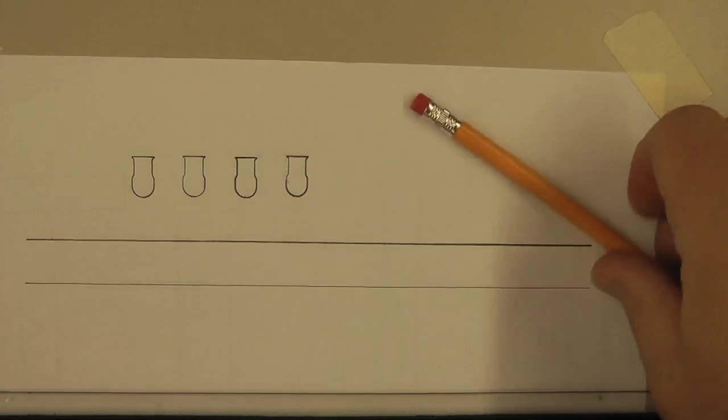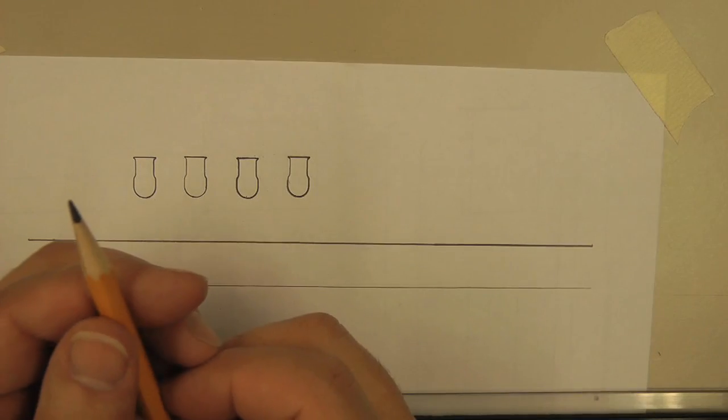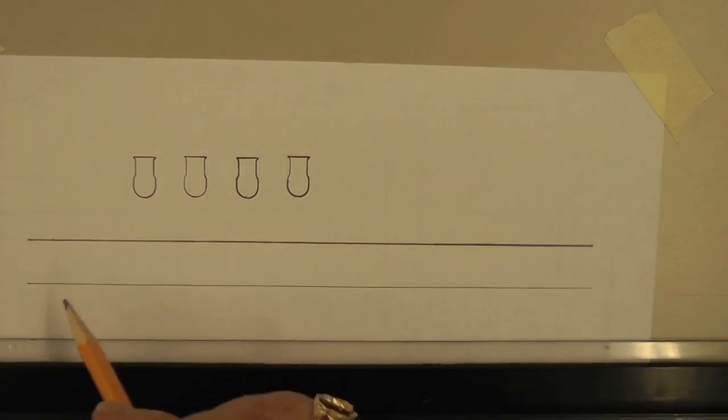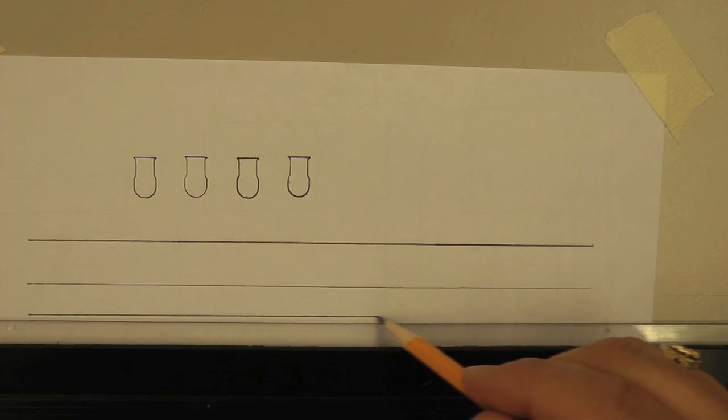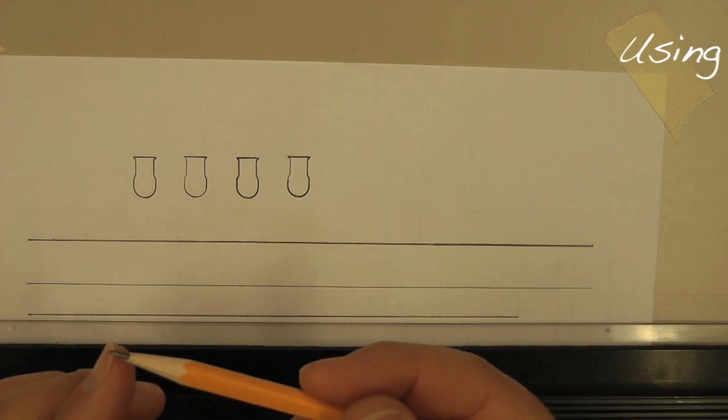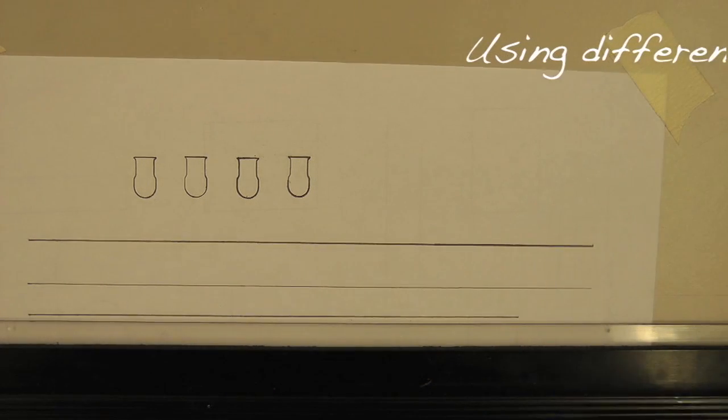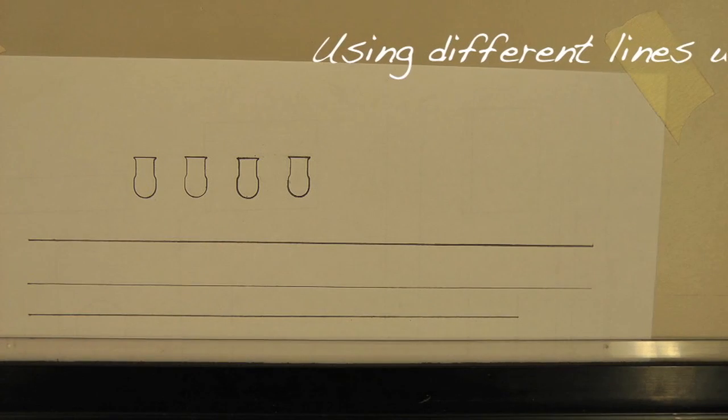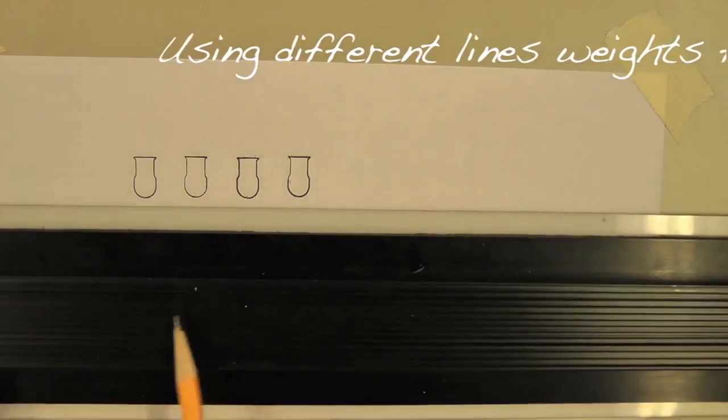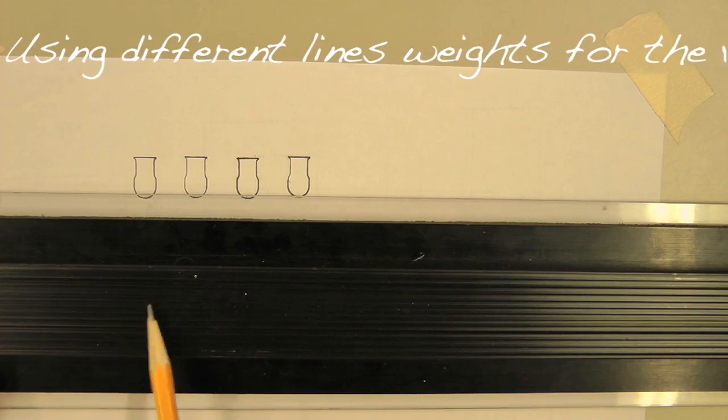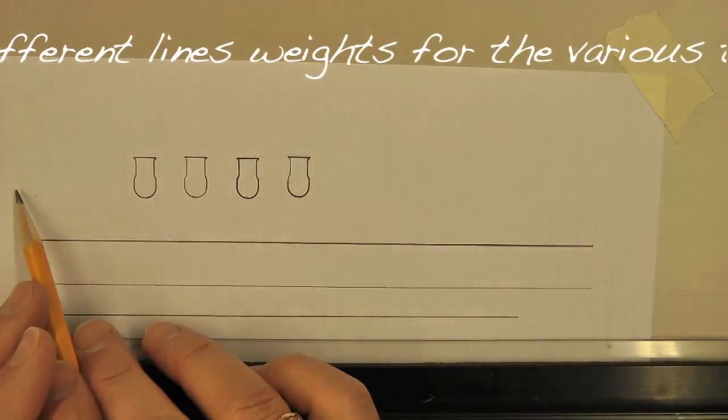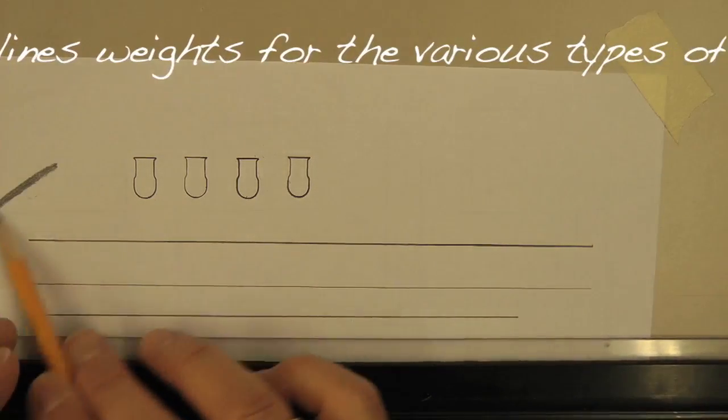This pencil now has an edge which is slightly slanted. So I can draw like this and it gives me a beveled edge. On my drafting table, I would have a piece of sandpaper on the table. So if I really need to do a sharp, fine edge, I could sand down my pencil.